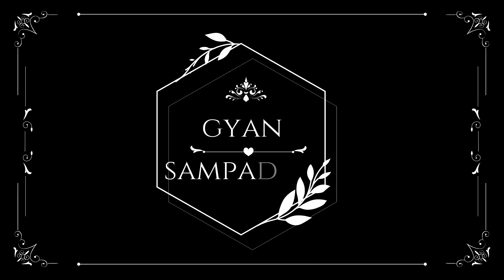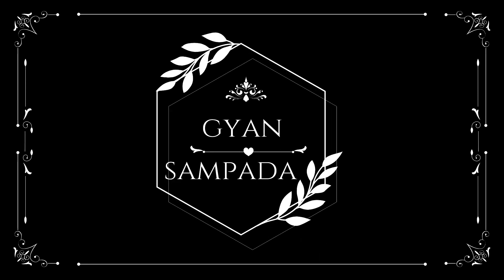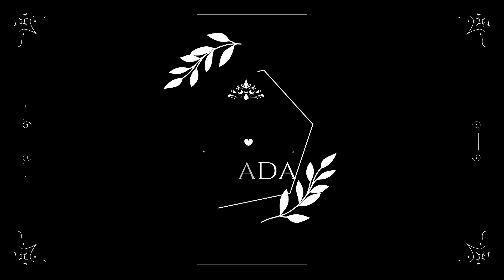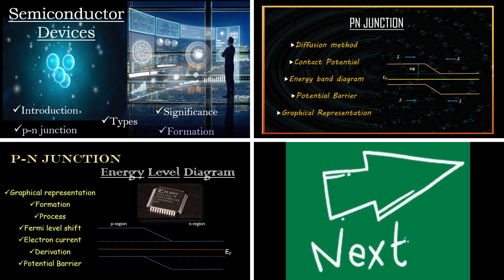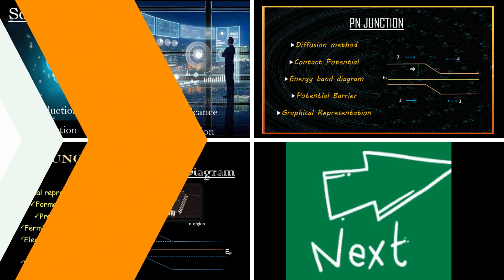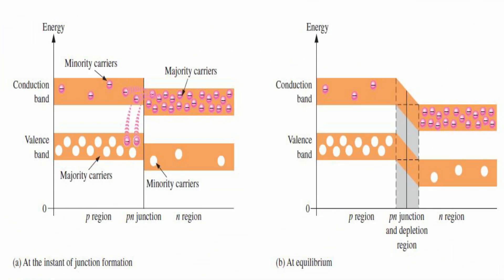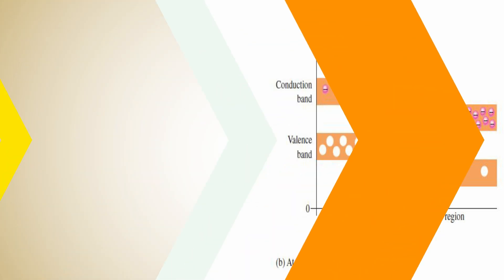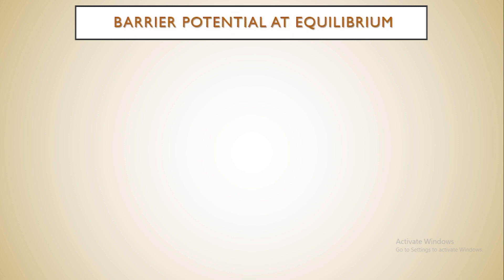Hello everyone and welcome back to my channel Gyan Sampada. In our previous classes we were discussing about semiconductor devices, under which we studied about the details of the P-N junction, and we also understood about the energy level diagram. Today we are going to continue with the potential barrier at the P-N junction, especially at equilibrium.